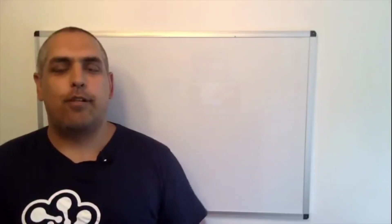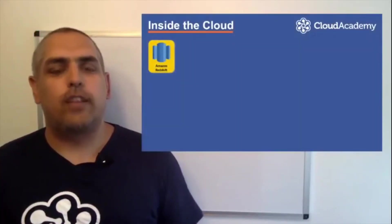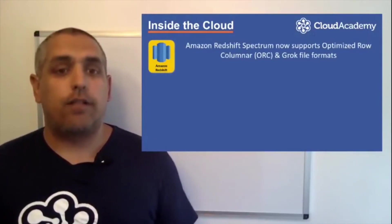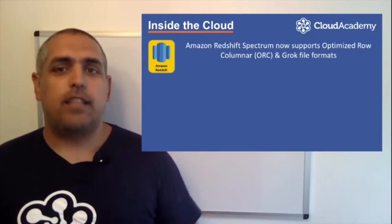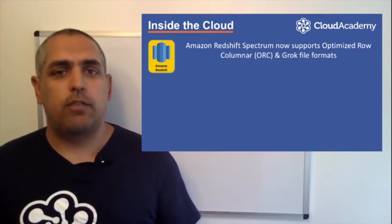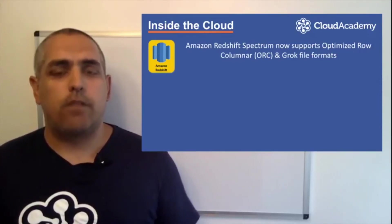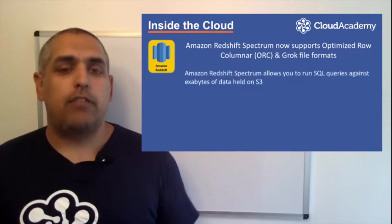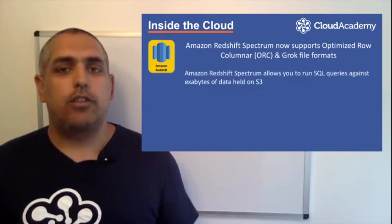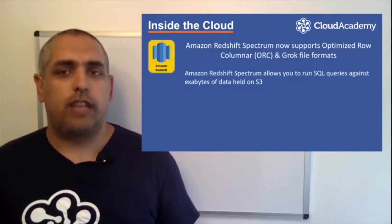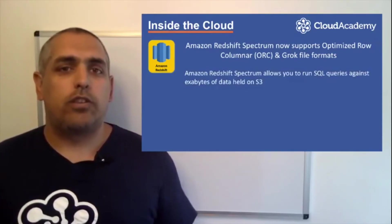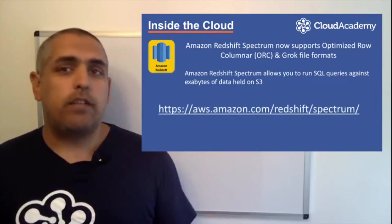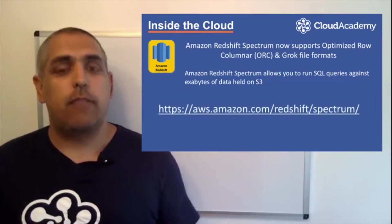The second point for Amazon Redshift was released on the 23rd of August, whereby Amazon Redshift Spectrum can now support ORC and Grok file formats. This means that the power of Amazon Redshift Spectrum can now query data stored in both of these additional formats. Amazon Redshift Spectrum allows you to run SQL queries against huge amounts of data you may have stored in S3 as a data lake, which could be multiple exabytes of data in size. More information on Amazon Redshift Spectrum can be found here.